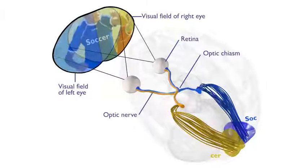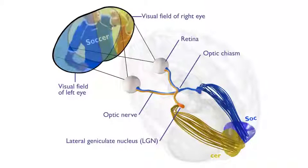Axons from the nasal halves of each retina crisscross to the opposite or contralateral lateral geniculate nucleus or LGN region of the thalamus. Axons from the outer sides of the retina send information straight back to the ipsilateral or same-side lateral geniculate nucleus region of the thalamus.